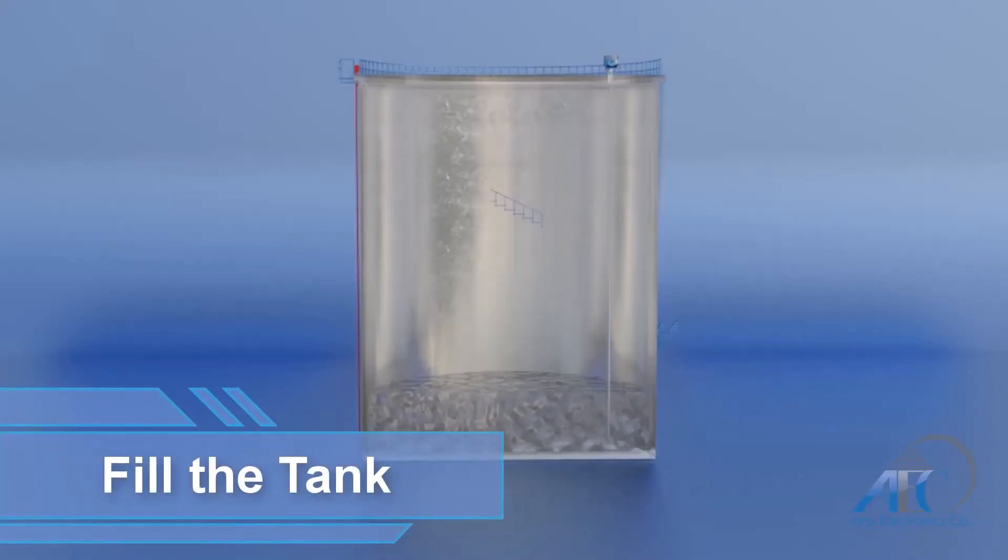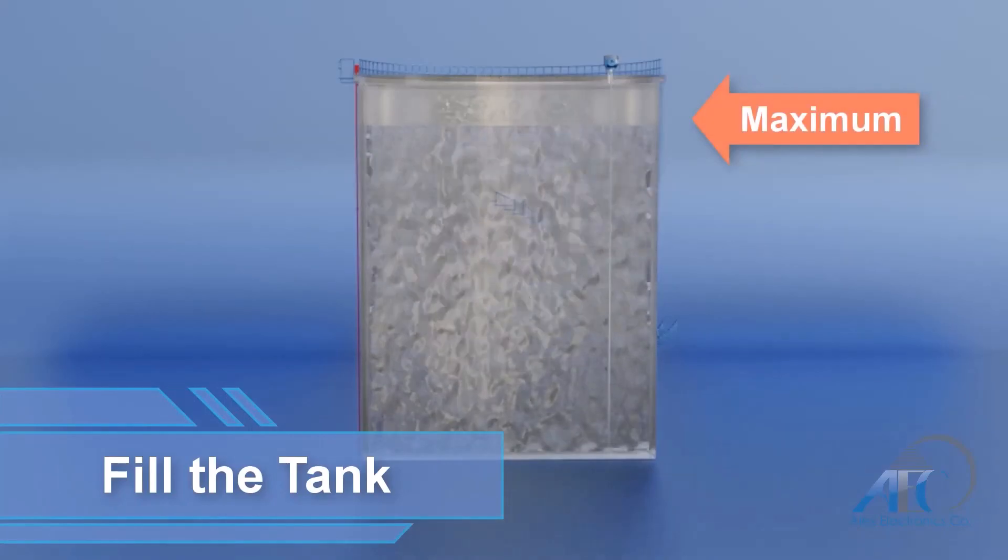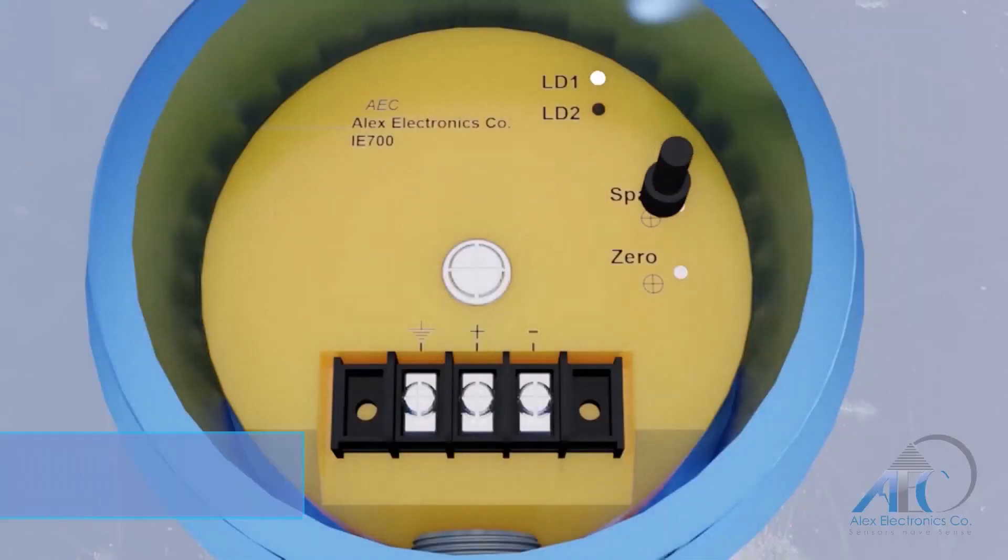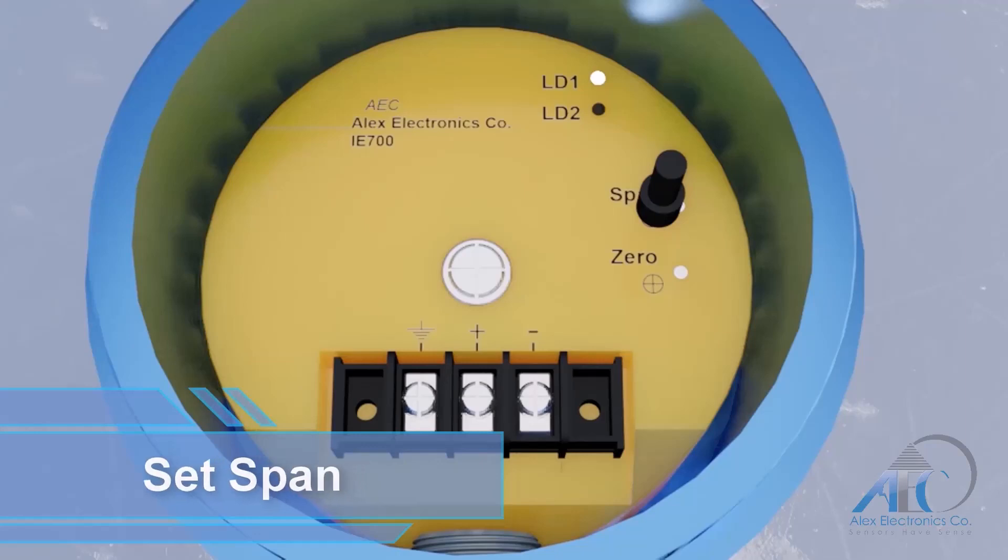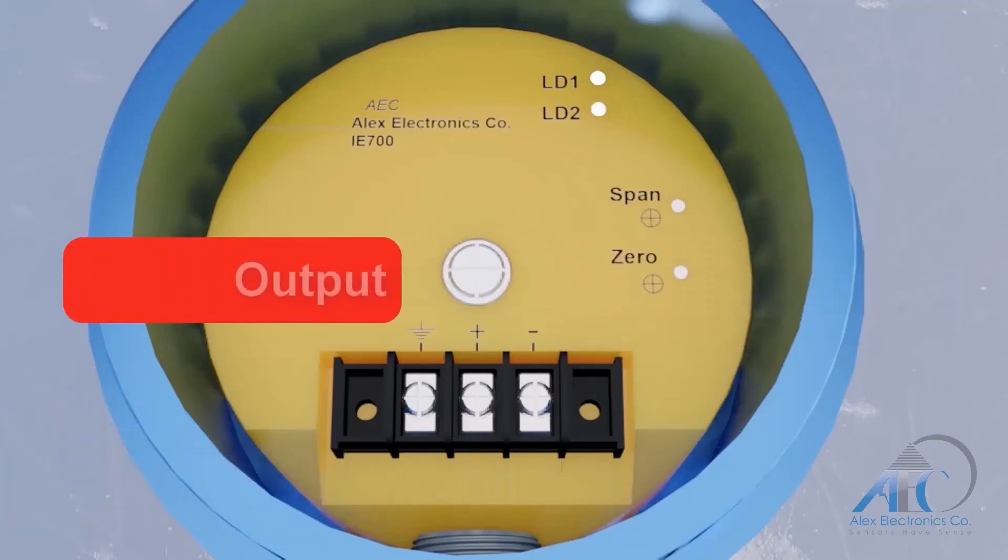To set the span, you need first to fill the tank to its maximum level. Then, use the magnetic pen with the span programming circle in the same way as shown previously. At this point the output signal is 20 mA.